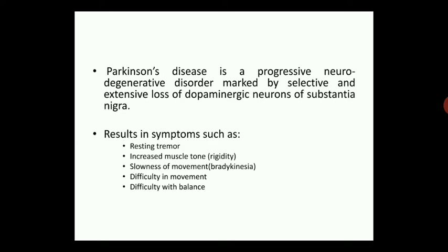Parkinson's disease is a kind of progressive neurodegenerative disorder marked by selective and extensive loss of dopaminergic neurons of the substantia nigra. As stated earlier, it is the substantia nigra that undergoes destruction, ultimately leading to reduced dopamine stores and reduced dopaminergic activity in that specific region, reducing the amount of dopamine within the brain.